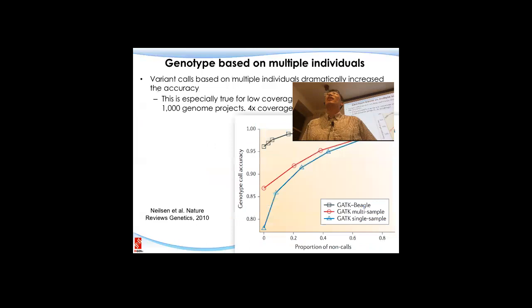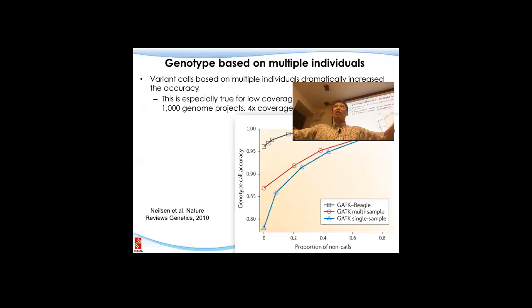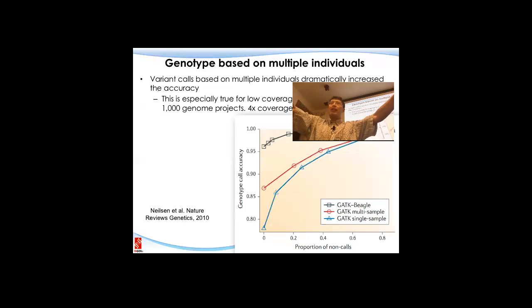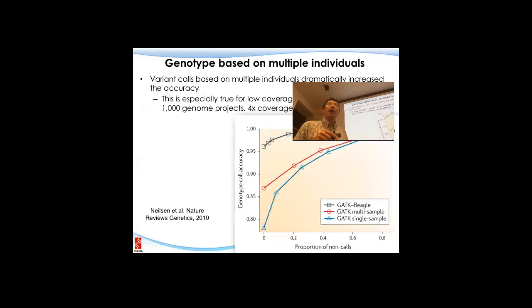For trios in the 1000 Genomes, they do include the parents. That is actually a better way to get phasing information in. If you have a child and two parents, and a position is heterozygous for the child, based on whatever the parents' nucleotides are, you can see which two alleles are on the same chromosome. So those parent-child trio information are being considered in the calculation — but only when you have the trio information with both parents and the child.